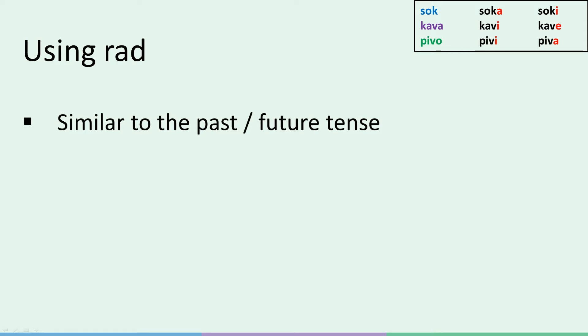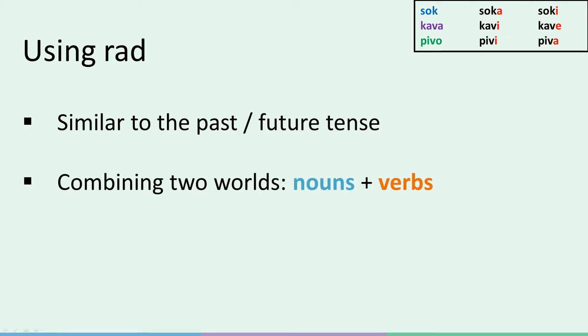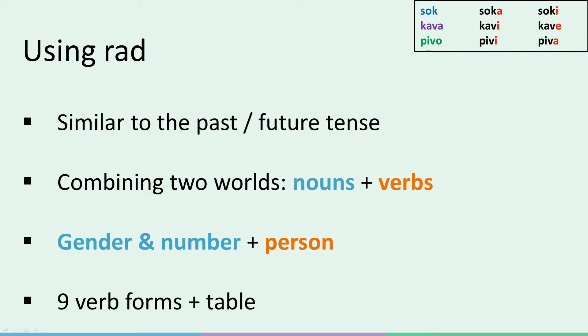So using rad correctly is basically quite similar to forming the past or future tense. In both cases, we have to combine two worlds and their respective characteristics. One is the world of nouns, and the other of verbs. They share some grammatical categories, but not others. Gender has to do with nouns and noun-like words. Number is shared by both nouns and verbs, whereas the category of person mostly has to do with verbs. All of this will become much clearer when we look at specific examples. Basically, the tools you need to use the past tense, the future tense, and rad is to know the nine conjugated present tense verb forms, along with the table in the top right.